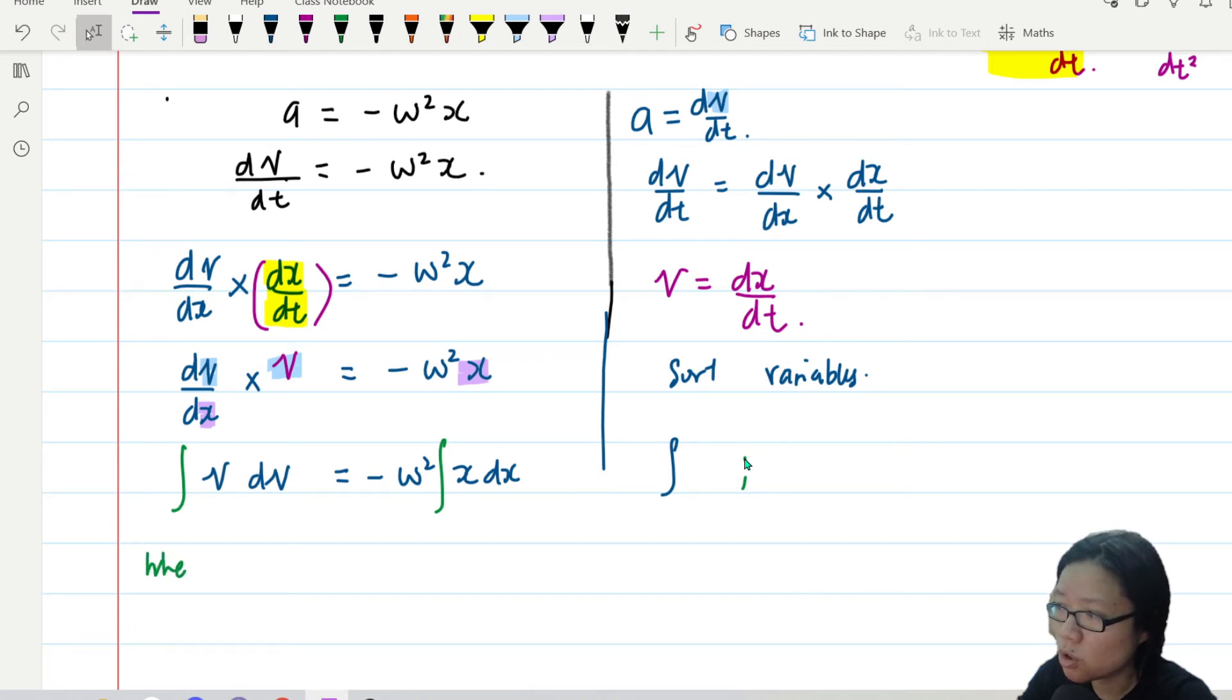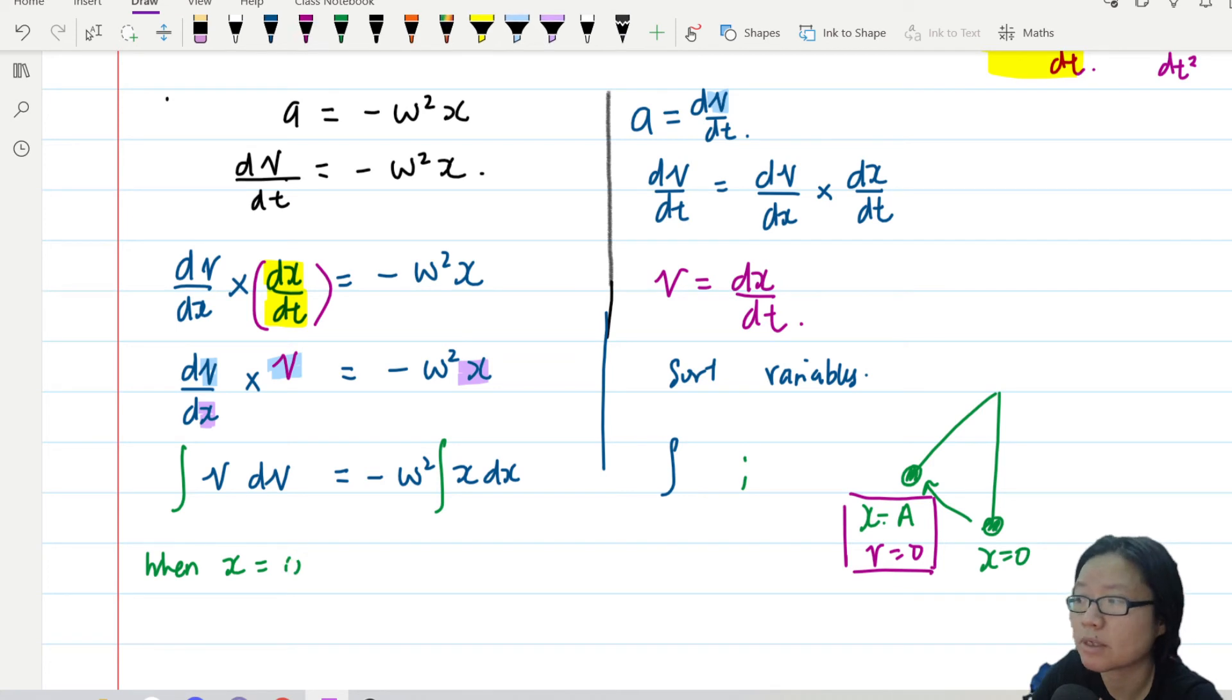When we started, we know that when x = 0, you don't necessarily know what v is. But I know when x = a, v = 0. Zero is my personal favorite number because the terms become easier.